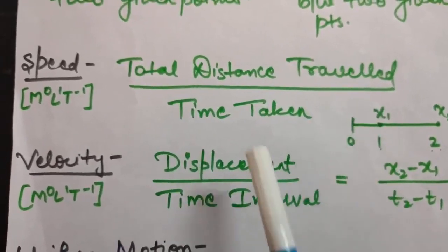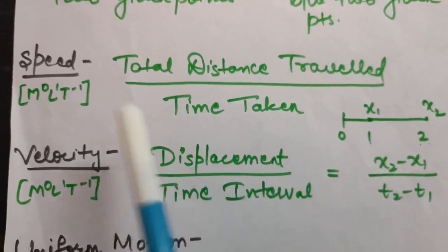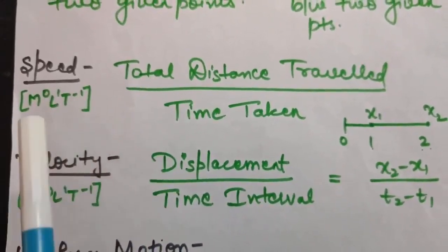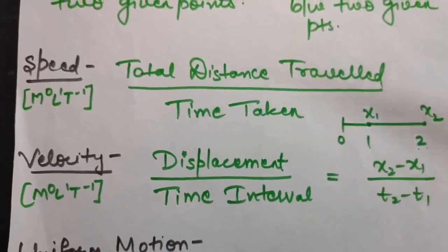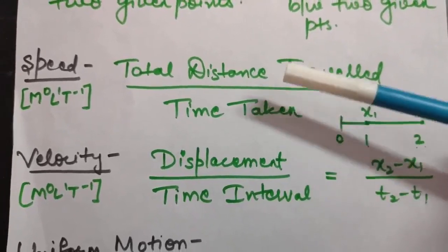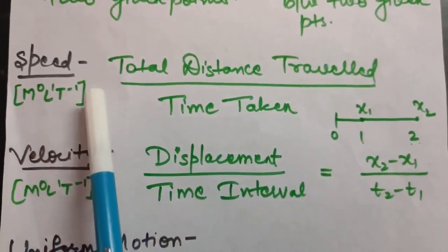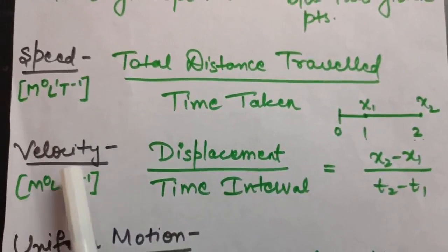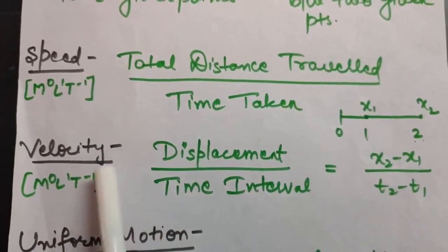Speed is defined as total distance traveled divided by total time taken, and speed is a scalar quantity. The SI unit is meter per second, and the dimensional formula is L¹T⁻¹.